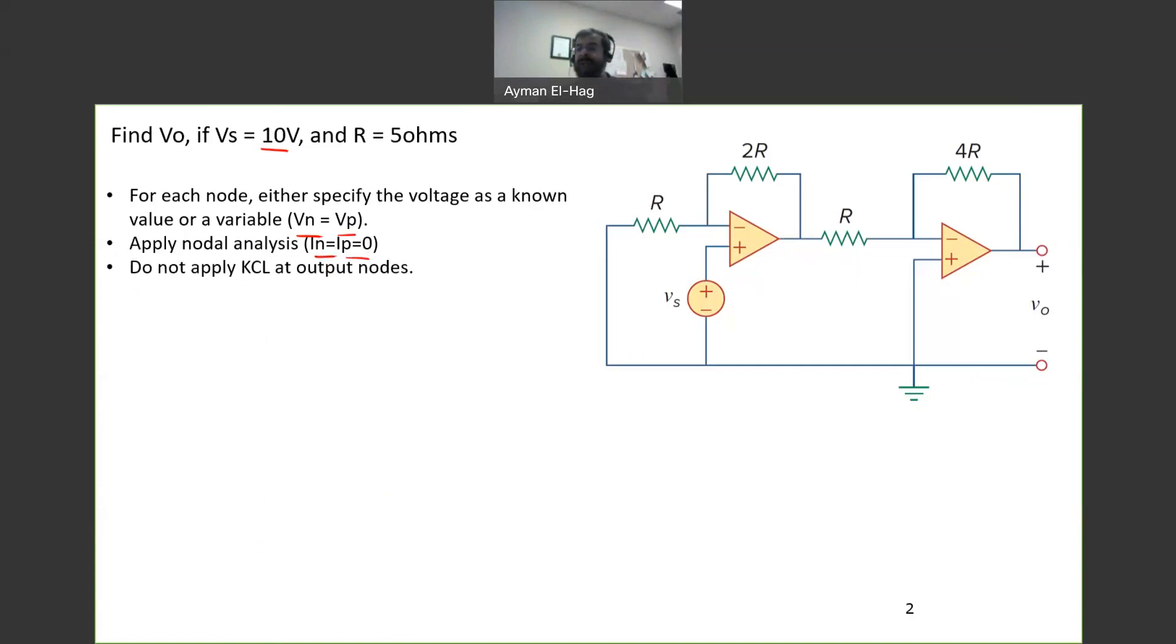Which is that I going into the negative terminal of the op-amp is equal to I going to the positive, which is equal to zero. And one last point, do not apply KCL at the output nodes. Why? Because the output node or the output terminal of the op-amp, it will have a current. So basically I will be adding an equation with another unknown.